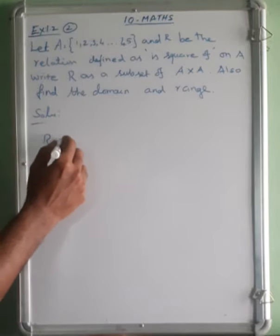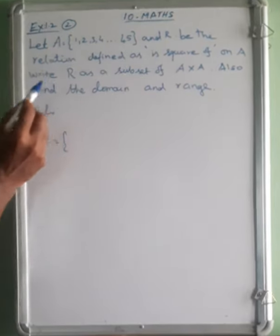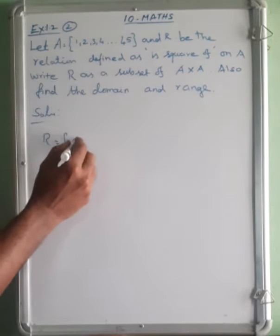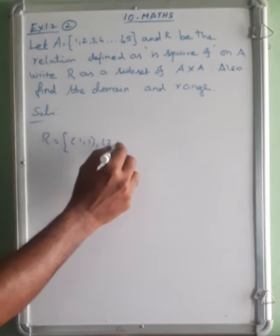A with R relation, we actually need to find the domain and range. Now this is square of A, and square of A: 1 of 2 square is 4.